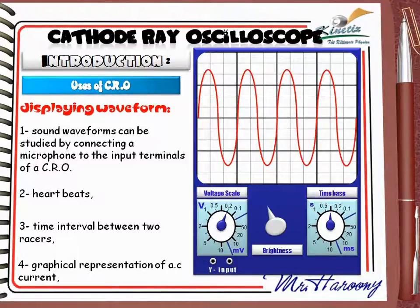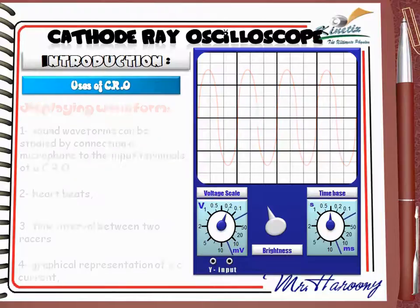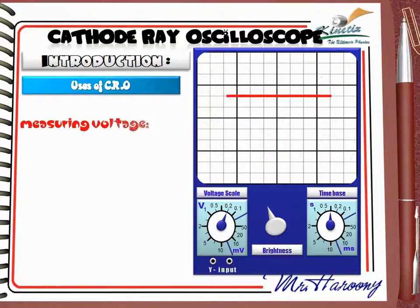كمان أقدر أرسم graphical representation لـ AC current اللي درسناه في الـ electromagnetic induction، بإننا نوصل الـ mains electricity بجهاز الـ CRO عن طريق فتحتين الـ Y input. كمان نقدر نستخدم الـ CRO في قياس الفولتج زي الـ voltmeter بالظبط، لأن الـ CRO بيُستخدم لقياس تغير الفولتج مع الـ Time.